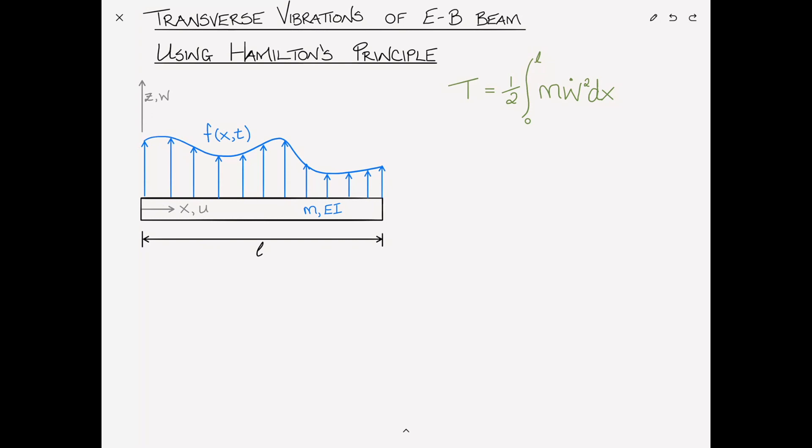We also showed that the strain energy for an Euler-Bernoulli beam can be written as the integral from 0 to L of one-half EI W,XX squared dx, where one-half EI W,XX squared is fundamentally the moment times the curvature of the beam, and is the work done by the internal stresses.